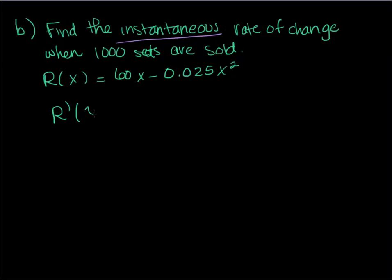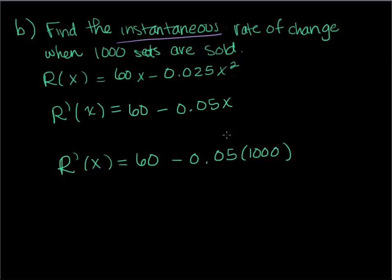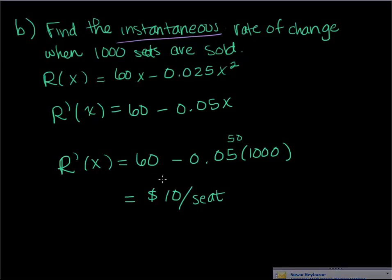What I need first is the derivative. So the derivative here is going to be 60 minus 0.05x. That's just simply using the power rule. And then what do I want to do here? I'm going to plug in the 1000. So R'(1000) equals 60 minus 0.05 times 1000. 60 minus 50, so this is just 10. This is $10 per seat. That would be my instantaneous rate of change.